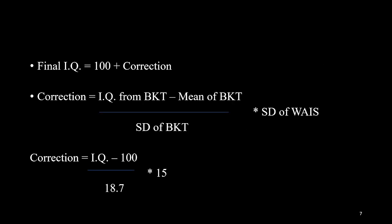Formula: Final IQ is equal to 100 plus correction. Formula for correction is: Correction equals IQ from BKT minus mean of BKT that would be 100, divided by SD of BKT that would be 18.7, into SD of Wechsler that would be 15.